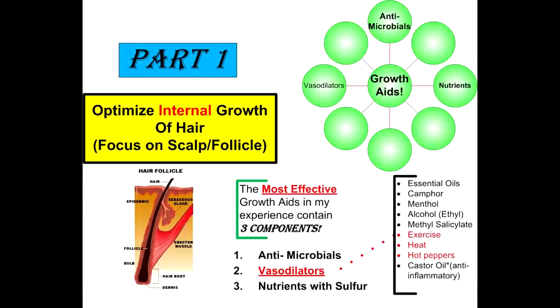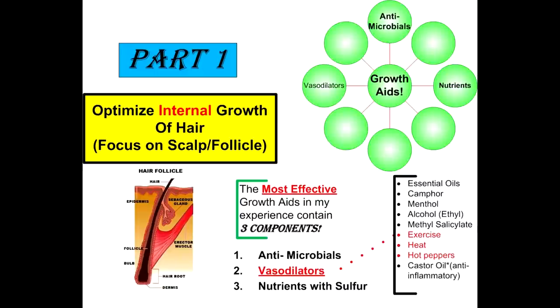The second component is vasodilators — things that make circulation faster, that relax the veins, and allow more blood to flow through at the same time. Vasodilators include camphor and menthol again, essential oils, heat, the active component in chilies, exercise, and niacin. These are the things that help speed up circulation.